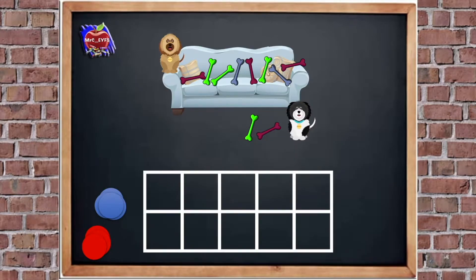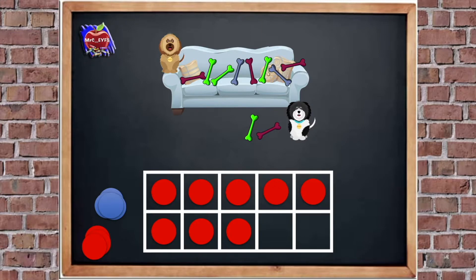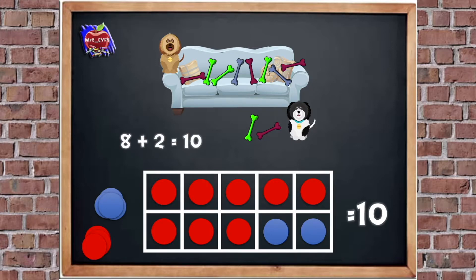I'm going to show you now what we just did, but using a tens frame and some counters. The bones that were on the sofa, I'm going to use red counters. So how many did we have? Yeah, there were eight. So I'm going to put eight red counters into my frame: five, six, seven, eight. How many bones did Barney have on the floor? Two. So I'm going to put two blue counters in: one, two. So we've got eight red and two blue. How many does it equal altogether? Yeah, ten, because our tens frame is full. So the number sentence is: eight add two equals ten. Can you say that? Eight add two equals ten.